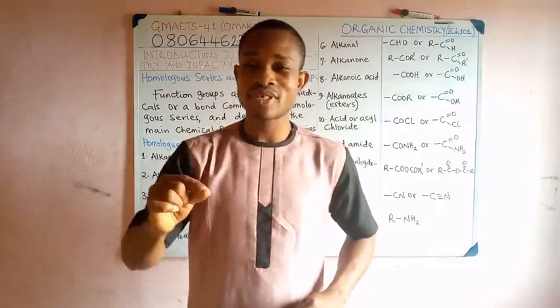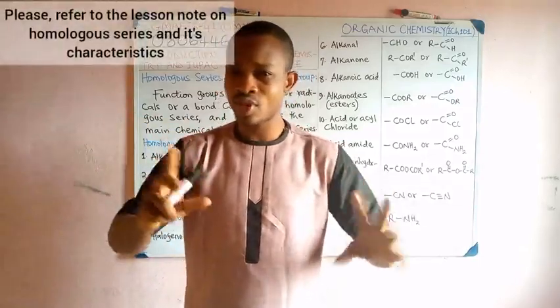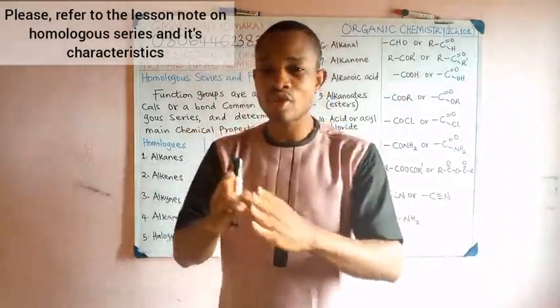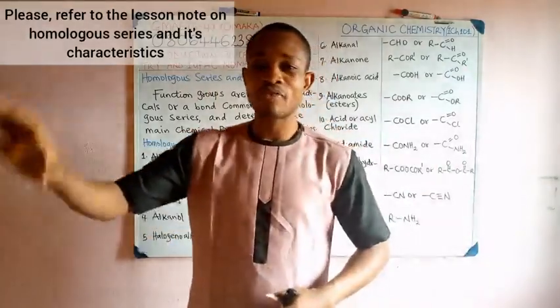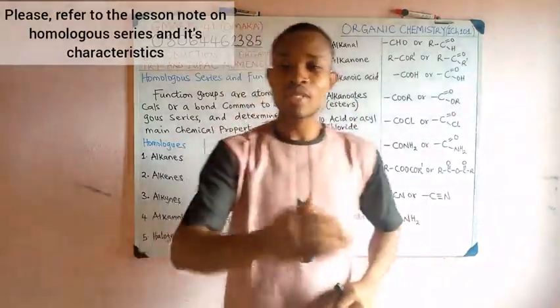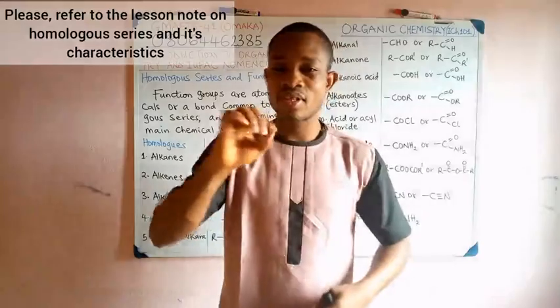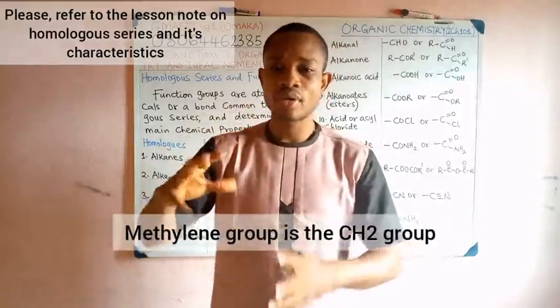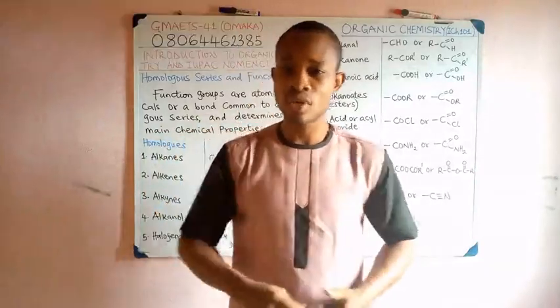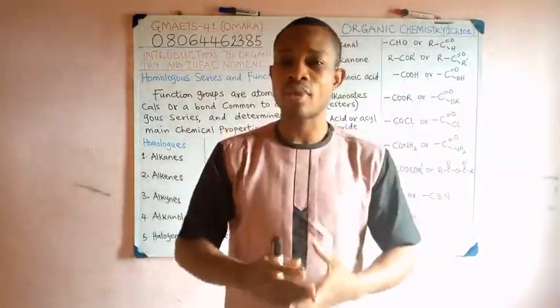Now, we want to look at homologous series and functional groups. Previously, homologous series has been defined to be a family of organic compounds that have certain similar characteristics. For example, a particular homologue will have a general pattern of preparation, a general molecular formula, a general chemical property. And successive members of a given homologue differ from the next with a methylene group, that is a CH2 group. The molecular mass of that CH2 is 14. That defines homologous series for us.